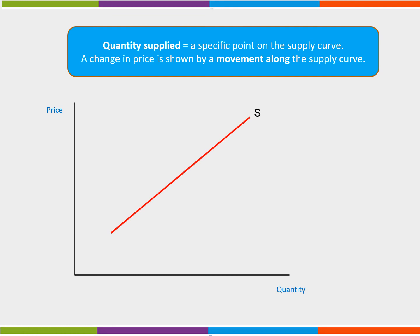A change in quantity supplied means a change in the price of a product has led to a change in the quantity supplied that firms are willing and able to supply at a new price. At a price of £10, firms supply 80 units. If price was to increase to £15, supply would also increase to 100 units. This is shown by a movement along the supply curve from 80 to 100 units.